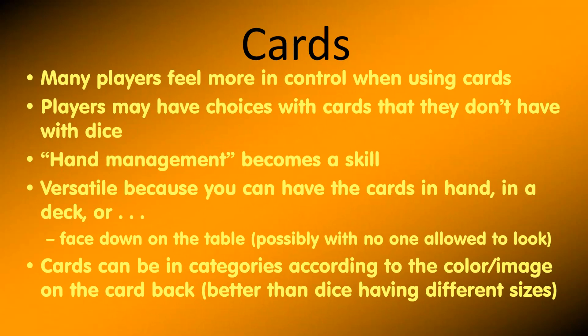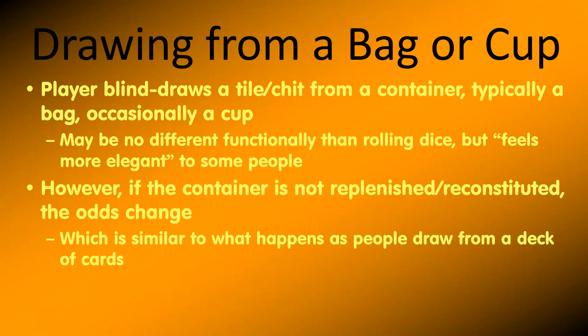An alternative to dice is cards. Many players feel more in control when using cards, and players may have choices with cards that they don't have with dice. A typical deck has 54 cards — there could be 54 different cards that each does a different thing, so you tend to have more variety than with dice. Cards are versatile because you can have them in hand, in a deck, or face down on the table with no one allowed to look at them until they draw or do something particular. Cards can be categorized by color or image on the card back. However, a few dice cost less than a deck of cards, so that makes the game more expensive.